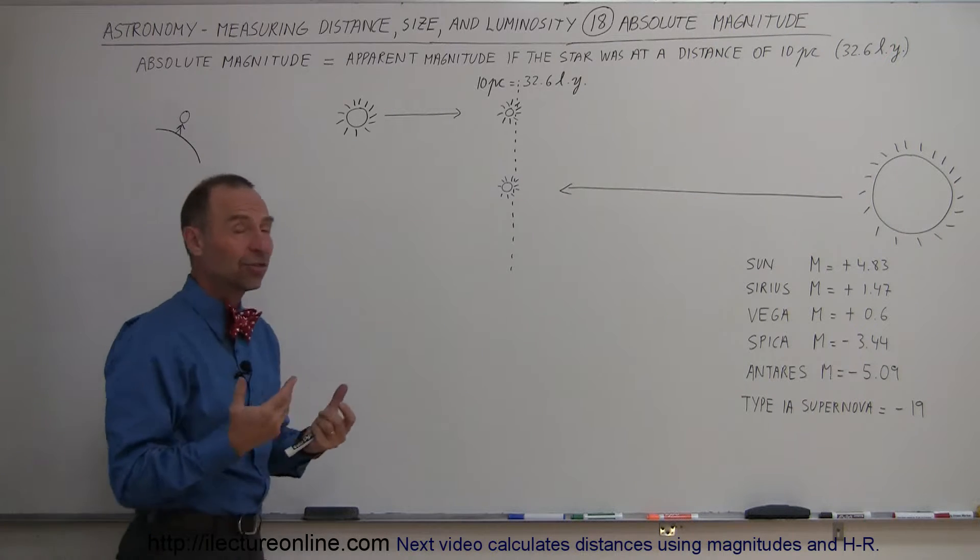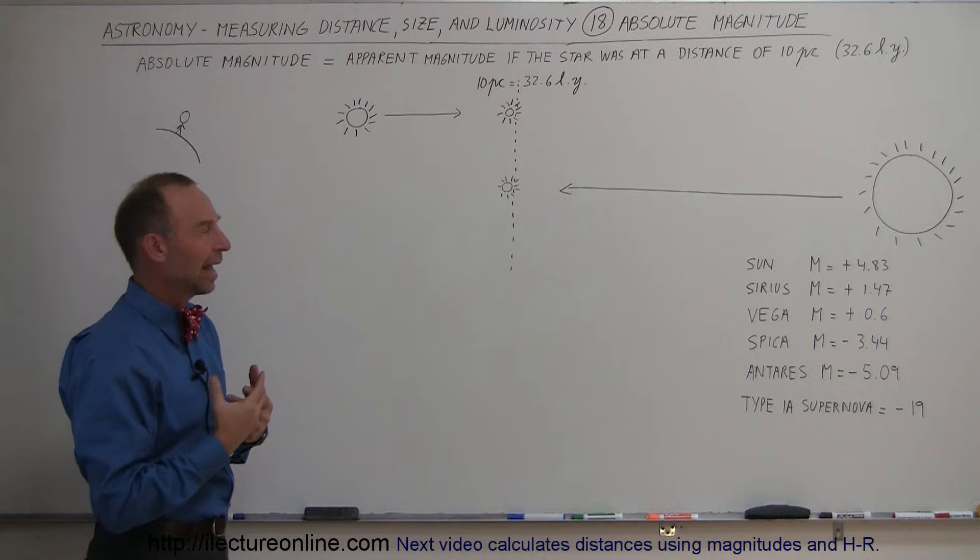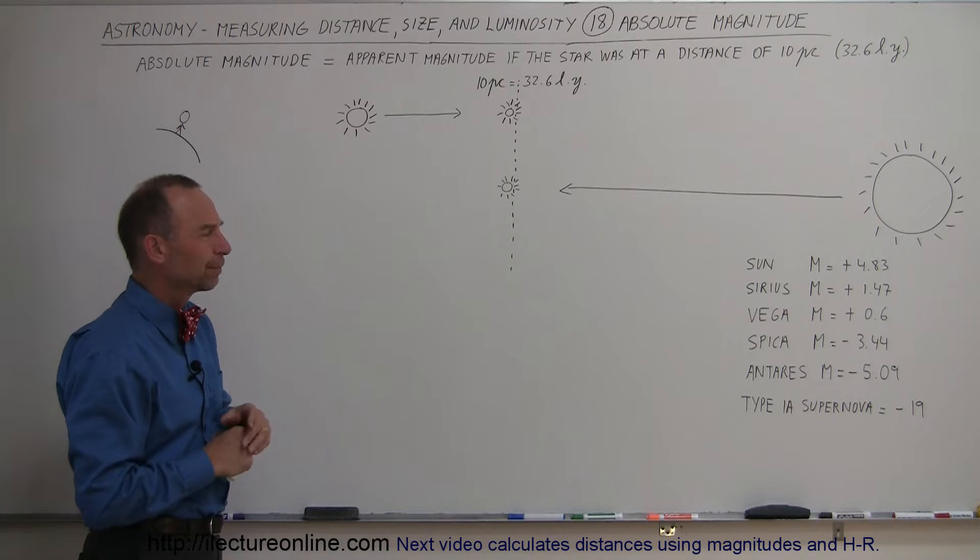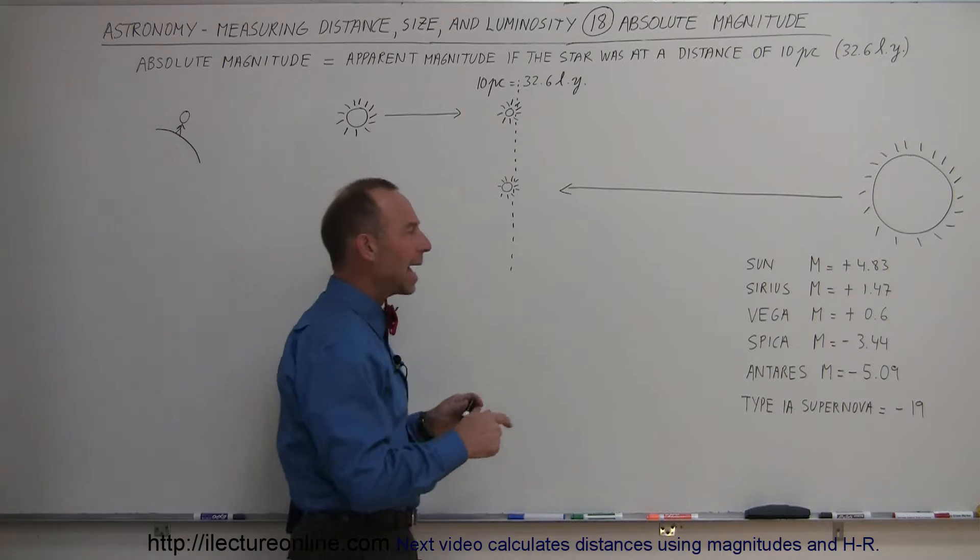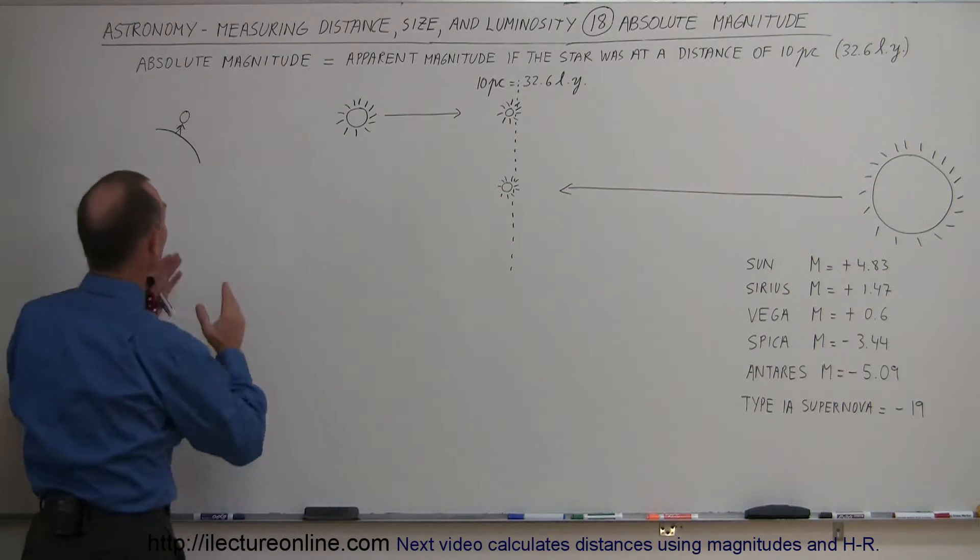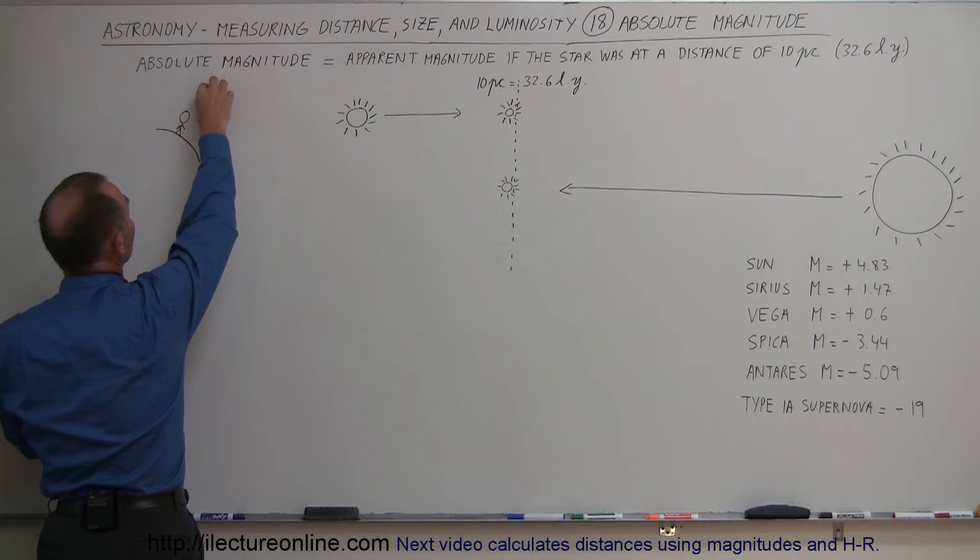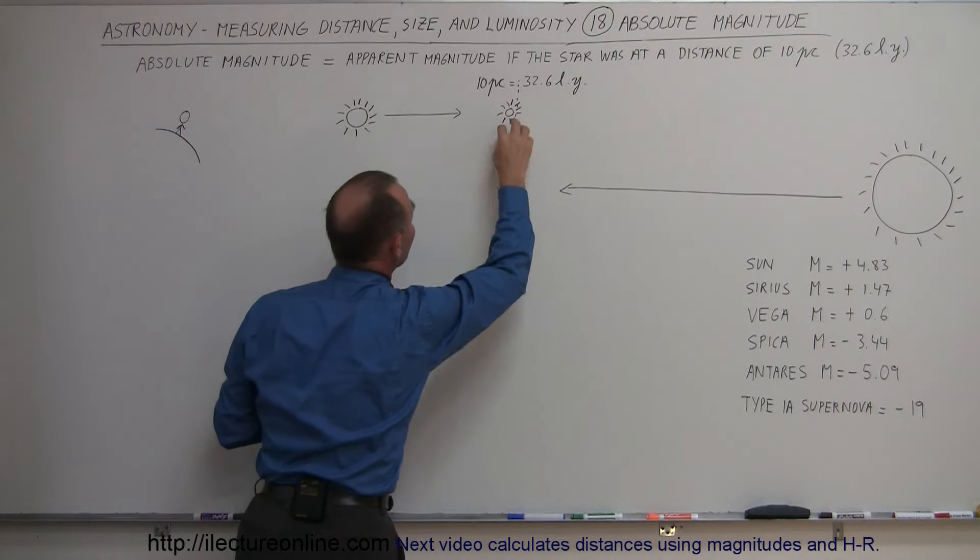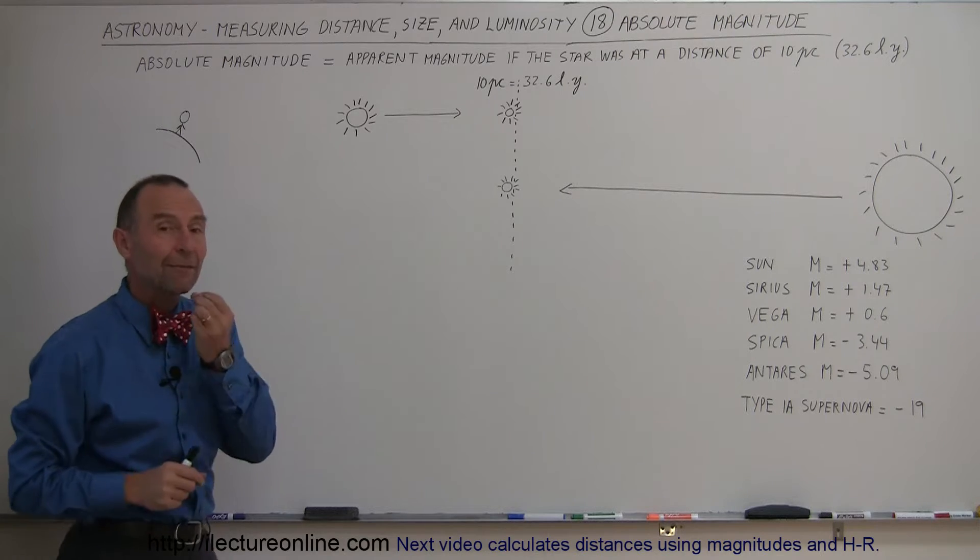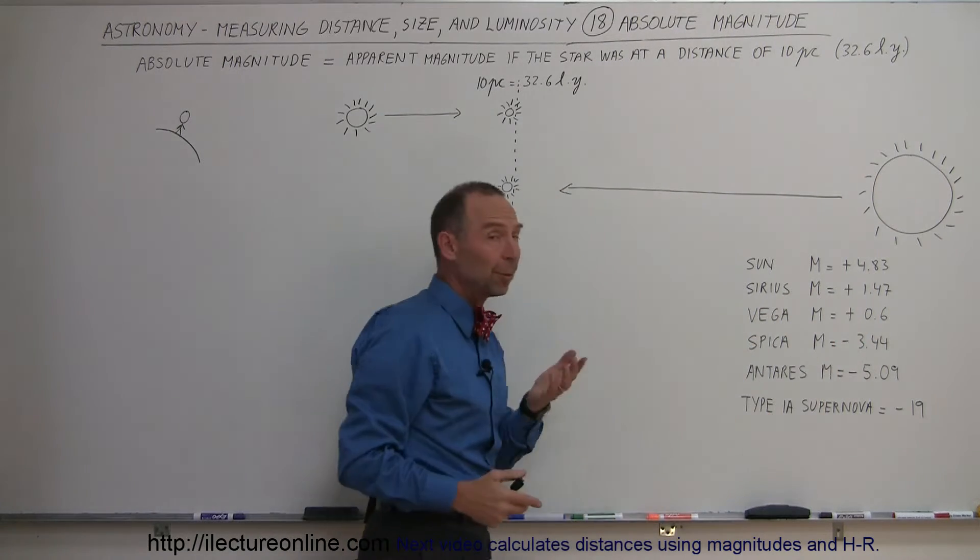For example, our sun, because it's so close to us, has an apparent magnitude of minus 26.7. The absolute magnitude is 4.83. So that means if we took our sun, which is very close to us, and we then moved it 10 parsecs away, or 32.6 light years away, it would appear to us to have a magnitude of 4.83, which is pretty dim.